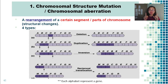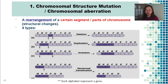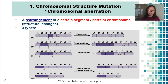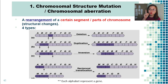Chromosomal aberration is defined as a rearrangement of certain segments or parts of the chromosome — it refers to structural changes due to mutation. The shape of the chromosome changes: a part may be lost, duplicated, inverted, or exchanged with another chromosome. We will look at each of the four types: deletion, duplication, inversion, and reciprocal translocation. In the diagrams, each alphabet represents one gene on the chromosome.